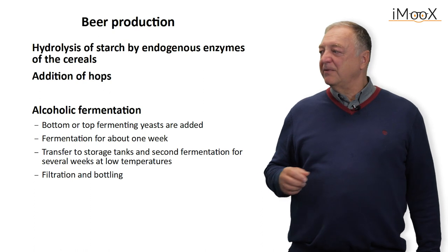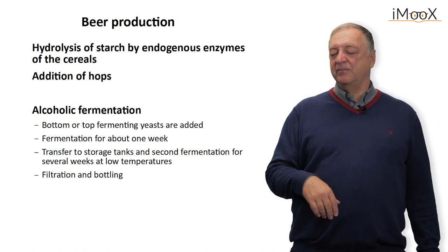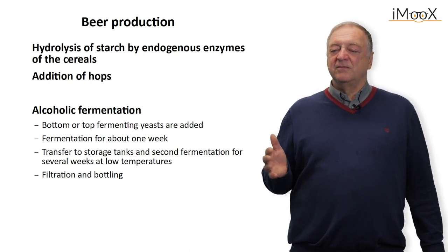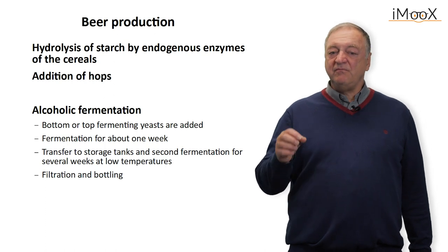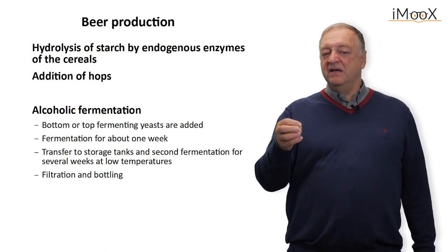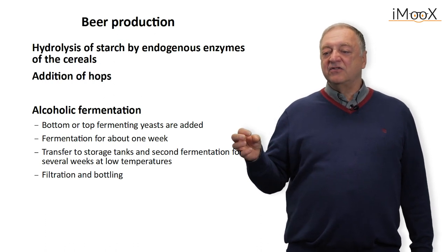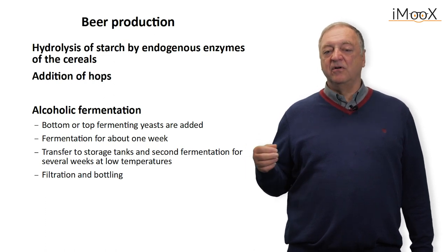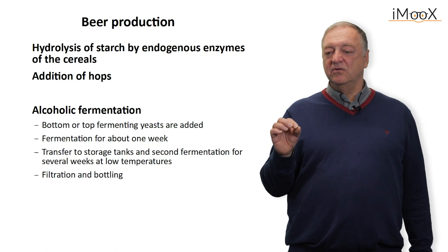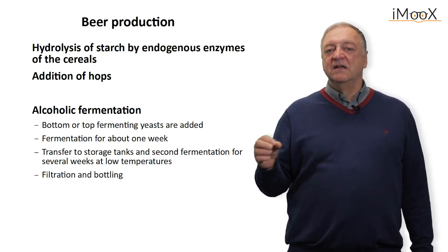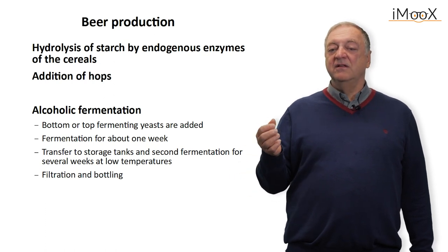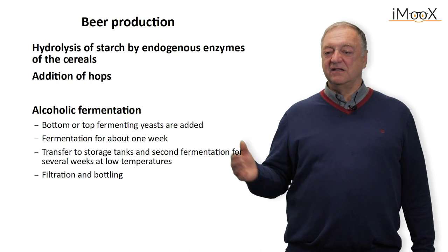The next step is alcoholic fermentation with the addition of yeast — either bottom or top fermenting. This primary fermentation takes about one week at temperatures around 15 to 20 degrees in open vessels where carbon dioxide is not retained. The beer is then transferred to storage tanks where a second, slower fermentation continues for several weeks to a few months at very low temperatures. During this process carbon dioxide enriches in the beer, which is then filtered and filled into casks or bottles to produce a clear liquid for consumers.